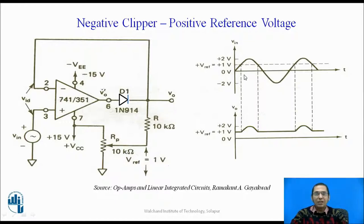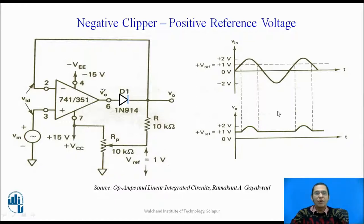So, this waveform can be divided into two parts. When the diode is on, the output equals the input. When the diode is off, the fixed voltage of plus 1 volt is available at the output. This is still called a negative clipper because the portion of the waveform towards the negative of the input is clipped off or chopped off.